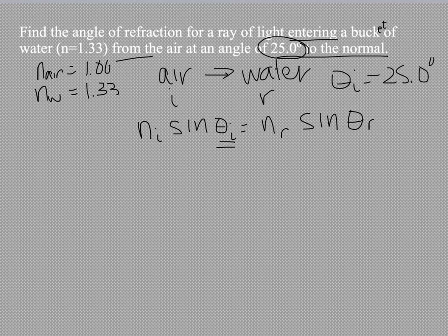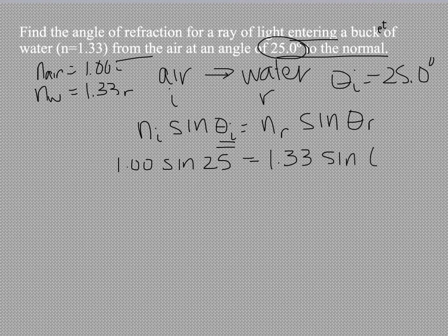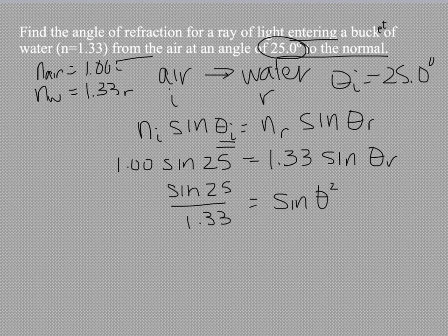So now we can go ahead and plug in our information. n air is our i and n water is our refraction. So we're going to have 1 times the sine of 25 equals 1.33 times the sine of theta r. If we rearrange this to solve now, 1 times sine 25 stays sine 25 and we're going to need to divide by 1.33. So we'll have sine 25 divided by 1.33 equals the sine of theta r.